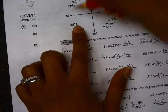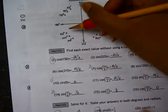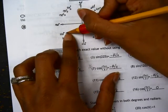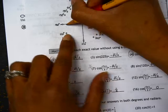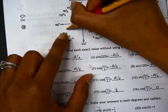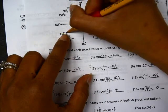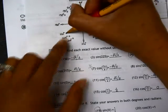Sine of 210 degrees, this is the vertical length, so this is the shortest vertical length, which is 1 half. Also negative because we're below the x-axis, so negative 1 half.